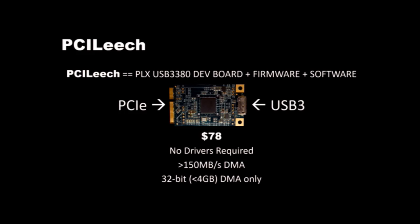With this piece of hardware I'm able to get well over 150 megabytes per second DMA transfer speeds. Unfortunately this chip is only capable of 32-bit addressing, meaning you're only able to access the lower 4 gigabytes of memory with this card — but as we'll see later on, that's not really a problem in practice.